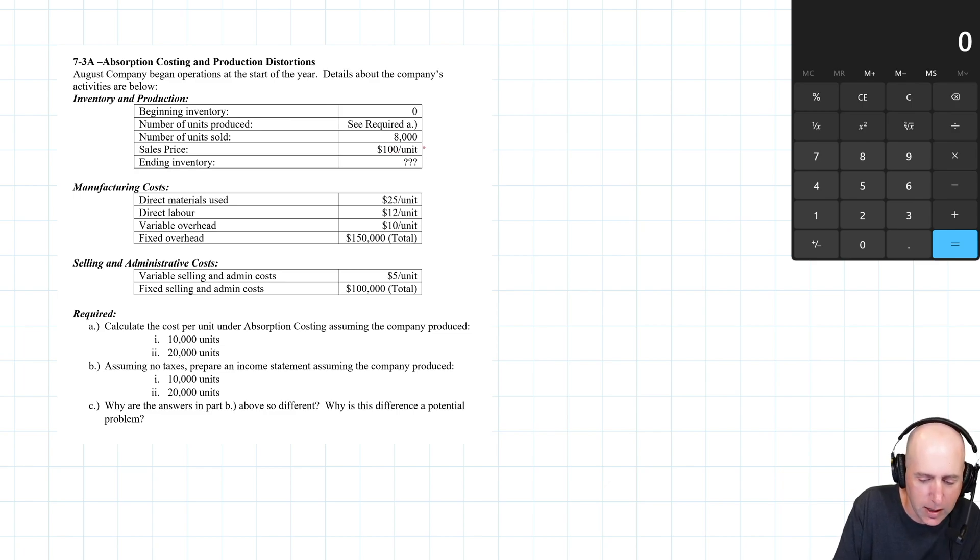Our sales price is $100 a unit. Our ending inventory will be different depending on whether we made 10,000 or 20,000 units. Material used, labor, overhead - these are all variable production costs. And then our fixed overhead is a fixed production cost, but under absorption costing it's part of the cost of product. Variable selling and admin, and fixed selling and admin.